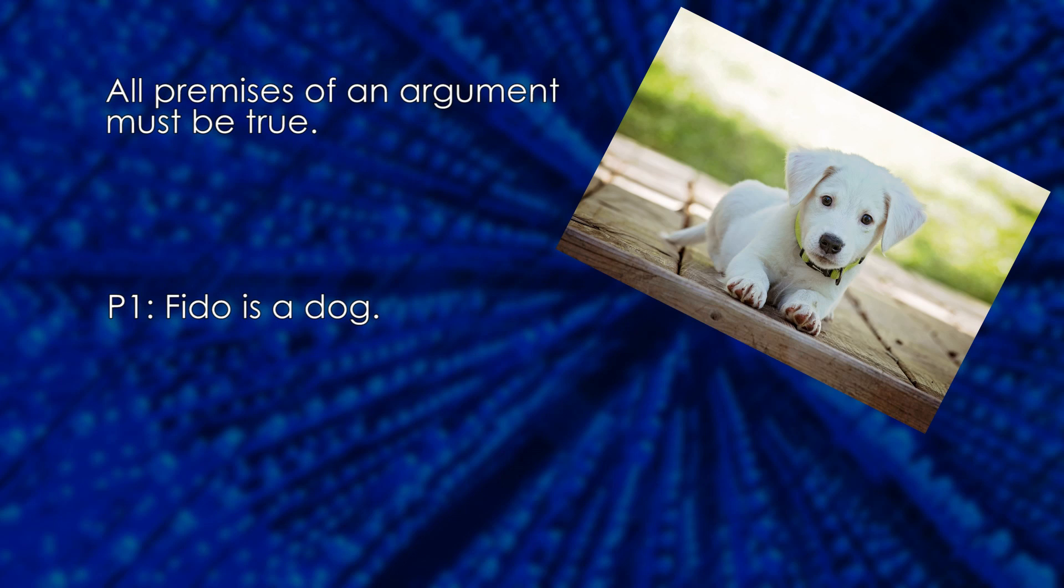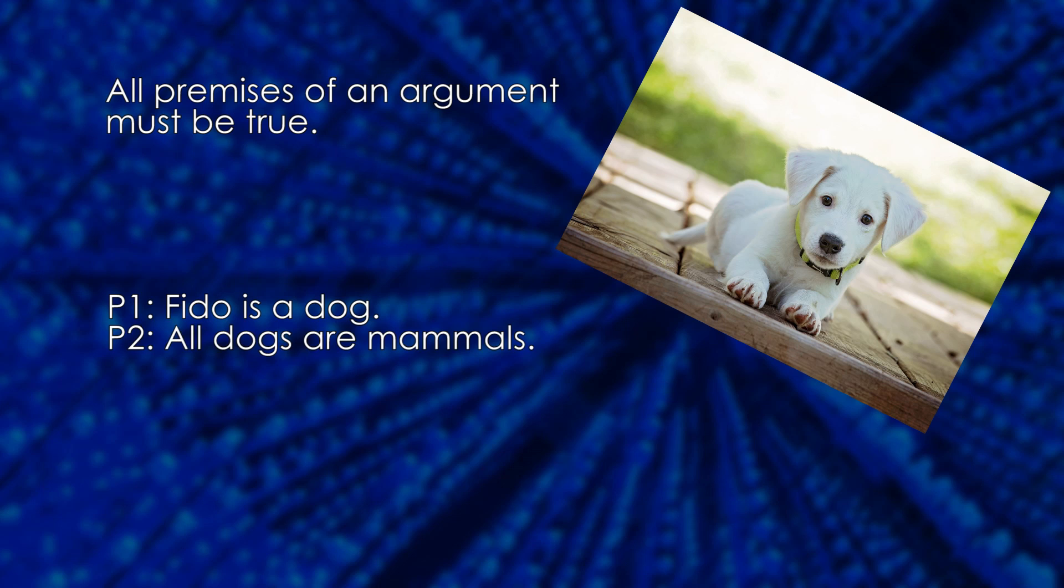all the premises must be true. Premise 1: Fido is a dog. Premise 2: All dogs are mammals. Therefore, Fido is a mammal.